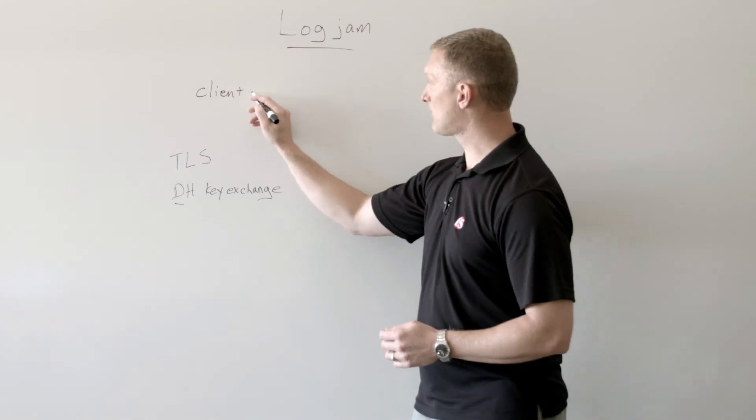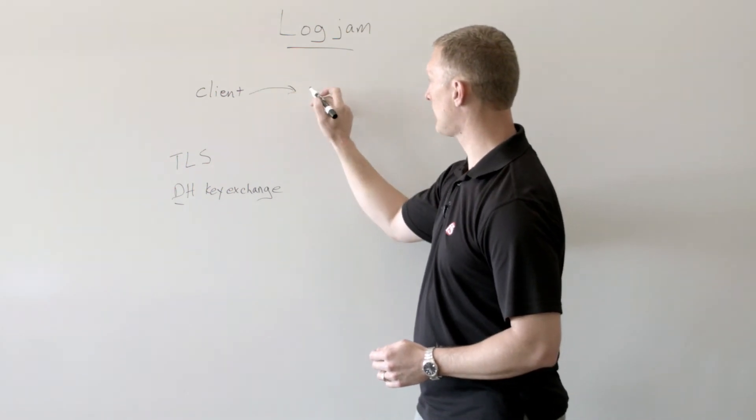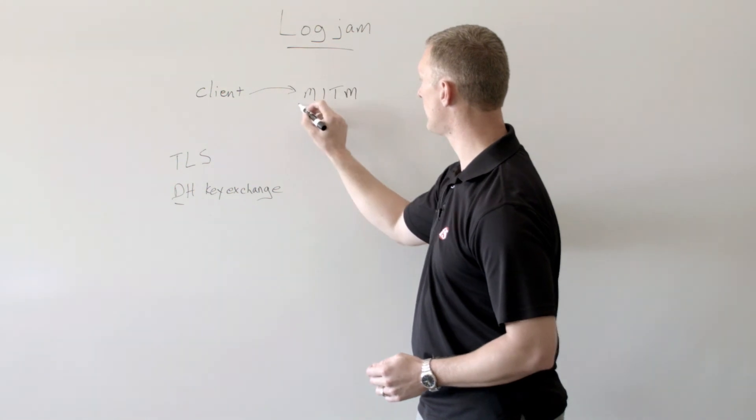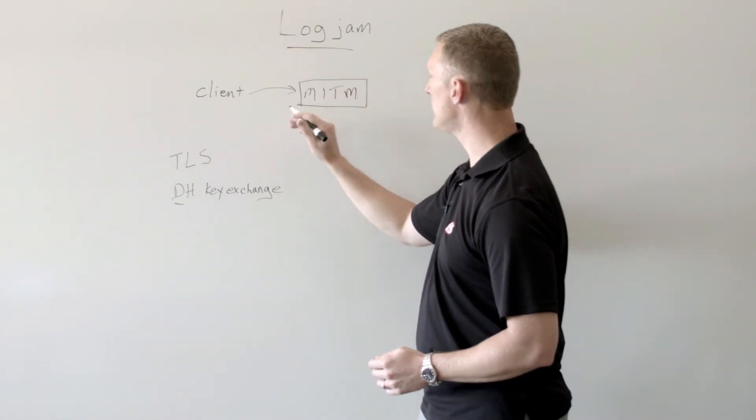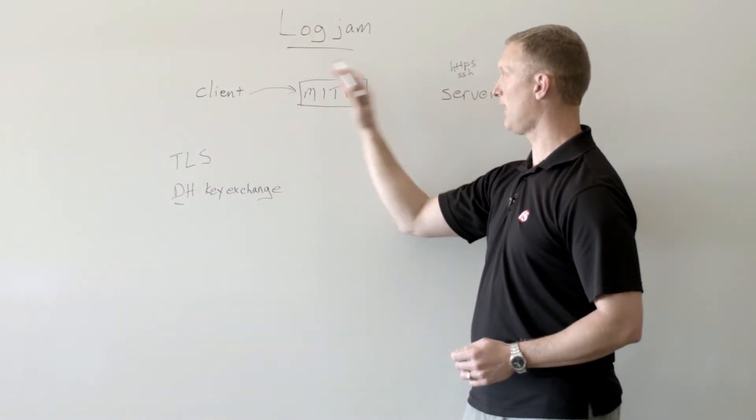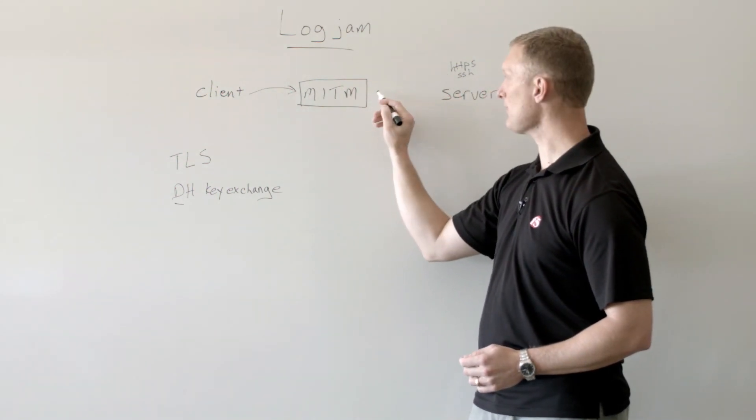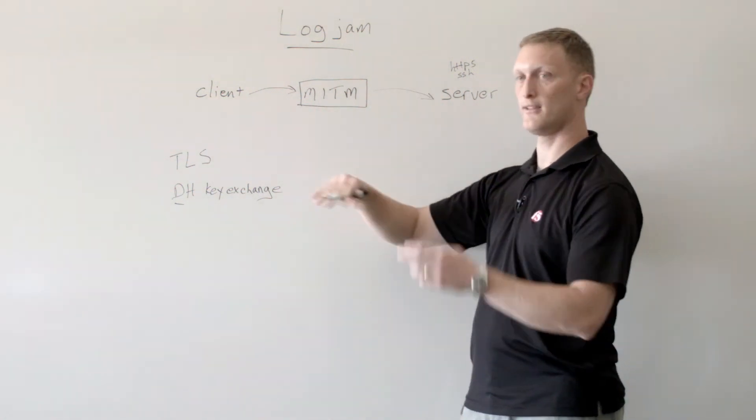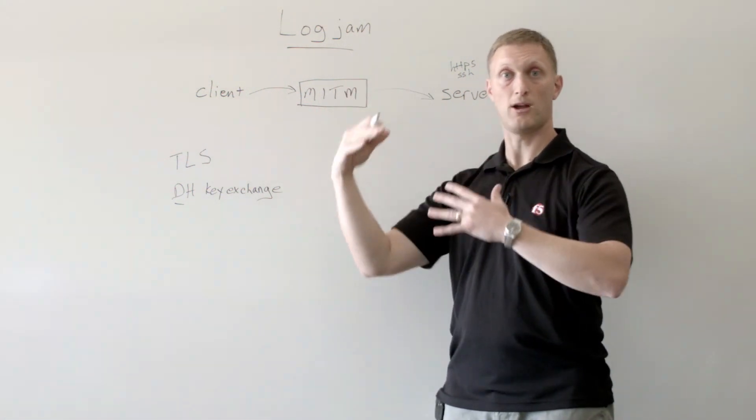And Logjam basically says, hey, client, when you access the server, as you're accessing it, I'm going to put man in the middle right here. So a man in the middle is going to inject himself in the middle of this client requesting the server. And then he's going to say, hey, even though the client has requested this really high level cryptography, this really strong stuff, he is going to say, hey, server,